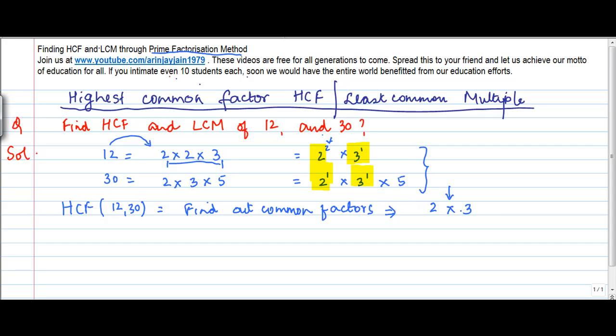Now you look at the powers of these numbers. The power of 2 in 12 is 2, and the power of 2 in 30 is 1. You take these two numbers and then take the least of these powers. The least is 1, so you put 1 here.